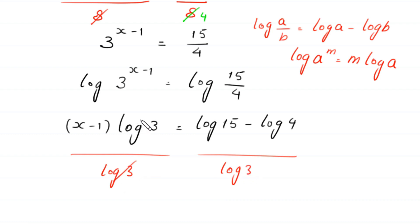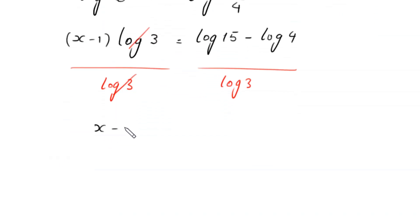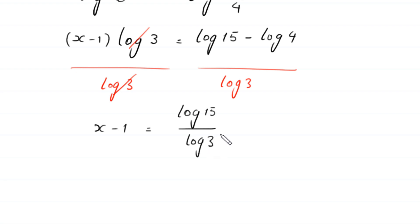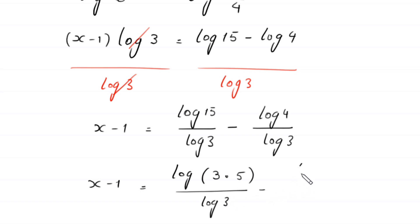So log 3 on the left cancels, and we are left with x minus 1 is equal to log of 15 minus log of 4, all over log of 3. This can be split as log of 15 divided by log of 3, minus log of 4 divided by log of 3. And log of 15 can be written as log of 3 times 5.